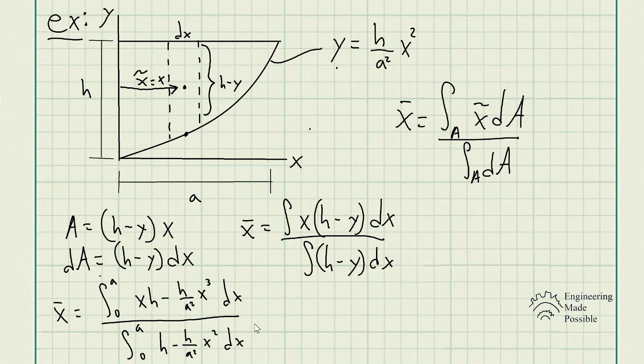Now let's go ahead and integrate and simplify this further. So we have the integral, which is h over 2 x squared take away h divided by 4a squared x to the power of 4 from 0 to a. Then the denominator is h times x take away h divided by 3a squared times x cubed from 0 to a. And let's keep on simplifying this.